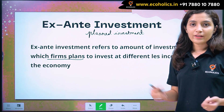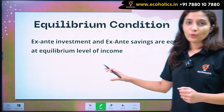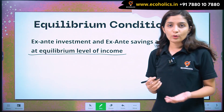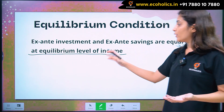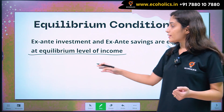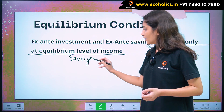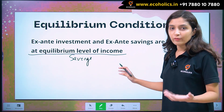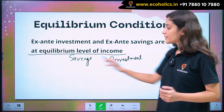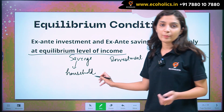So that was ex-ante savings and ex-ante investment. Now, the equilibrium condition is that ex-ante investment will be equal to ex-ante savings. But it is only at the equilibrium level of income that our ex-ante investment and ex-ante savings will be equal, because people who save are different from people who invest. Savings are done by households and investment is done by firms.